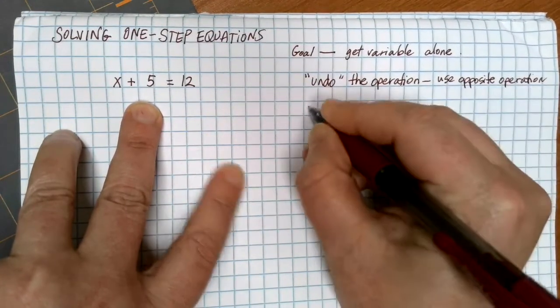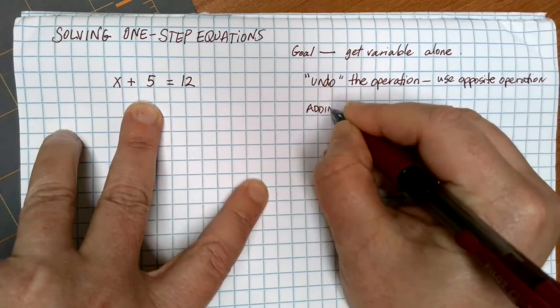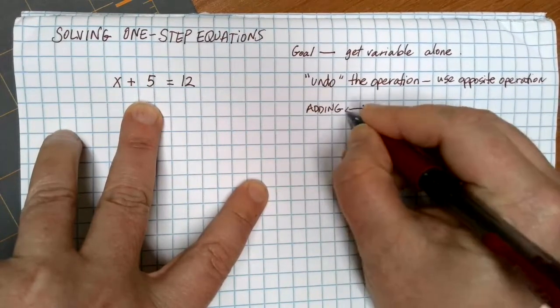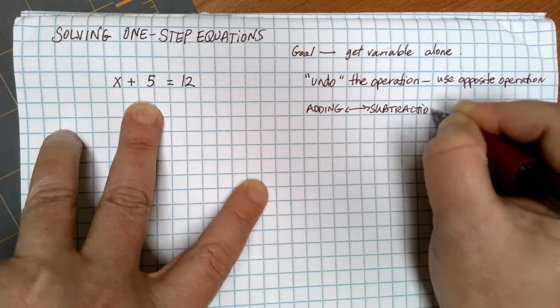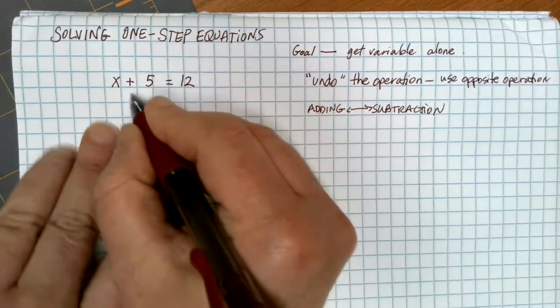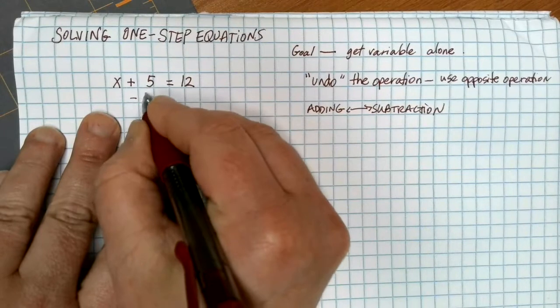Here, I'm adding something. The opposite operation of addition is subtraction. So here, where I'm adding 5, if I want to get the x alone, I can subtract 5.